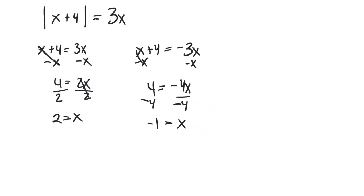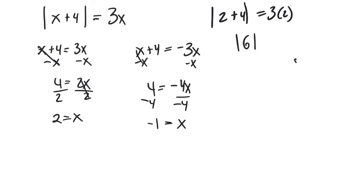There's one step left — I have to check that these values actually work; I can't just assume. I've done this enough that I can eyeball it: 2 is going to work and negative 1 is not, but let me show you mathematically why. Plugging in 2: the absolute value of 2 plus 4 equals 3 times 2 — that's absolute value of 6 equals 6, which is a correct statement.